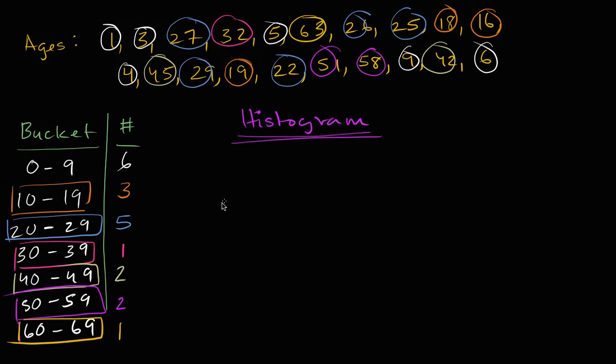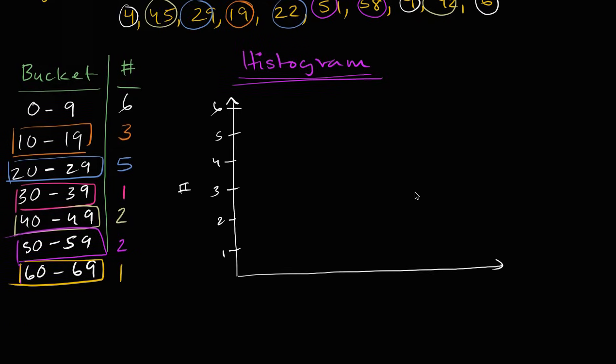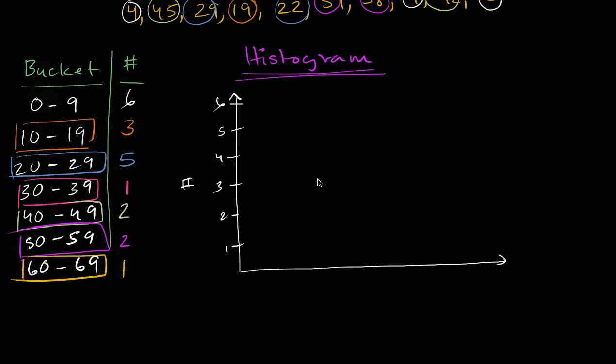All right. So on this axis, let's see. The largest category has six. So this is the number, number of folks. And it's going to go one, two, three, four, five, six. This is the number. And on this axis, I'm going to make the buckets. The buckets. And let me scroll up a little bit. Now that I have my data here, I don't have to look at my data set again.